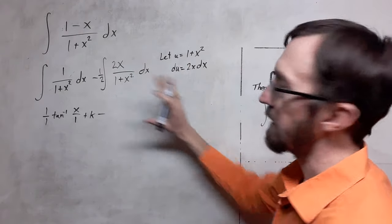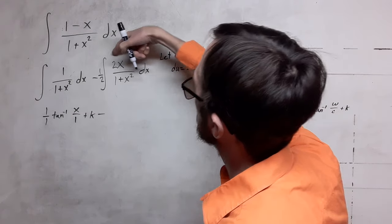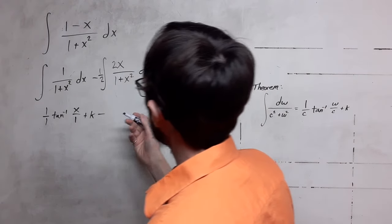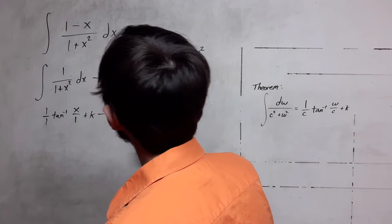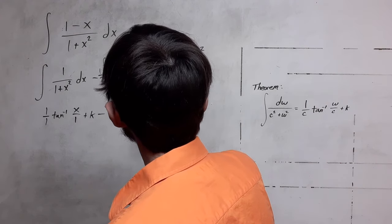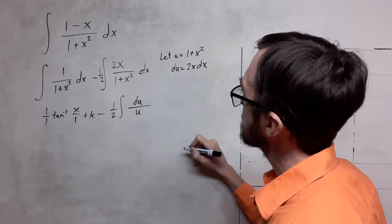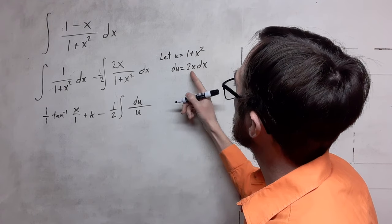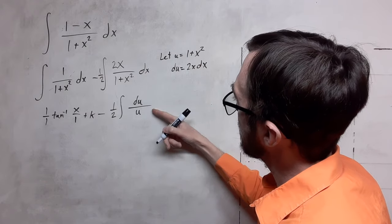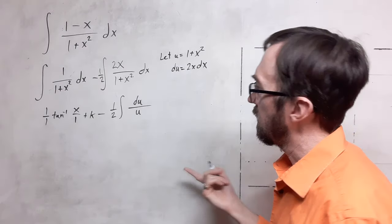2 times a half is 1, so we haven't changed the magnitude of this. So now we have this right here, and then we have this here. So we can replace that as 1 half, and then we have du over u. So this is the numerator and our differential, and then this was the denominator. So we have this. So this is the form that we would have for a logarithm.